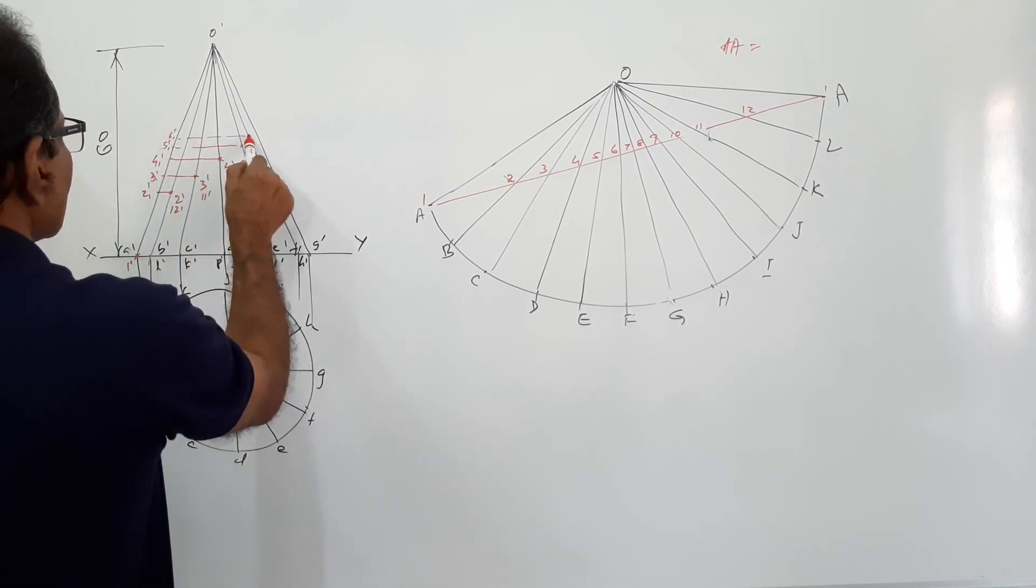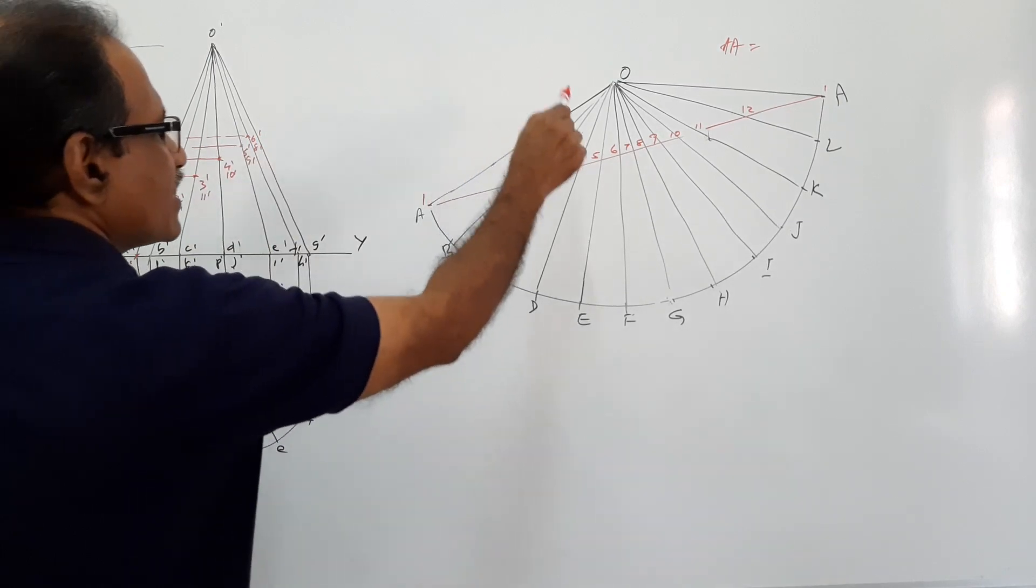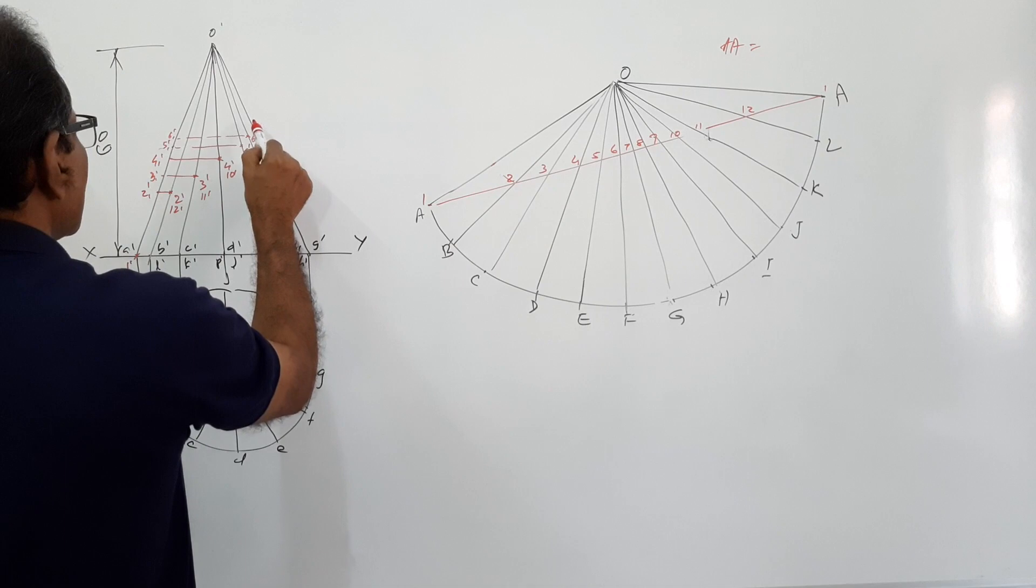O 6, this is 5-1 dash, this is 6-1 dash, 6 dash, 8 dash. Take O 7, it is already on the true length itself so you can mark it as 7 dash.